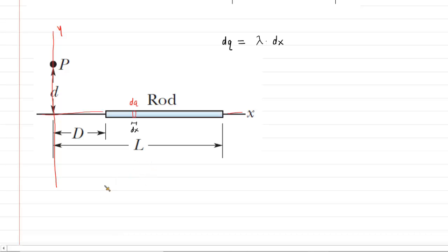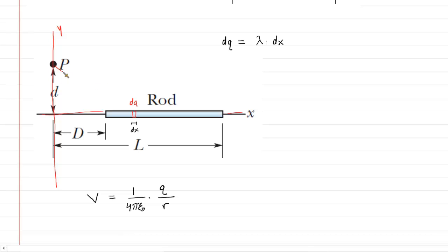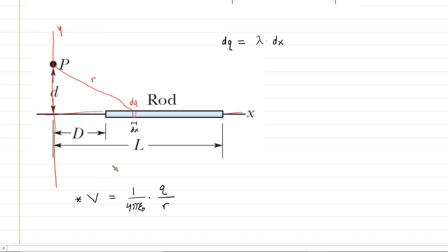What we want to remember is that in order to calculate the electric potential as the result of a point charge, we use the equation: 1 over 4 pi epsilon — which is a constant — multiplied by the charge, divided by the distance from that charge to the location of interest. That distance is the distance from our little charge element to point P, which we call r. We're going to slightly modify this equation because we have a differential element of charge, so we rewrite it as: dV equals the constant 1 over 4 pi epsilon, multiplied by dq, divided by r.